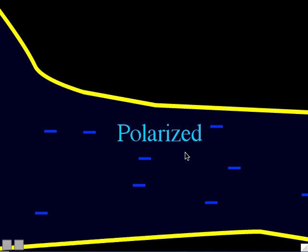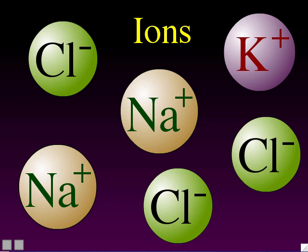You might wonder how resting neurons get negative inside. It has to do with ions — electrically charged atoms or molecules. Sodium ions have a positive one charge, potassium ions also have a positive one charge, and chloride ions have a negative one charge. For example, calcium ions have a charge of plus two, and phosphate ions have a charge of negative three. In this lecture, we'll focus on sodium, potassium, and chloride ions.